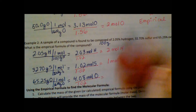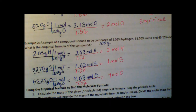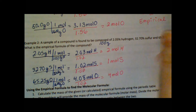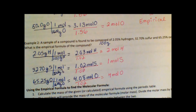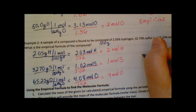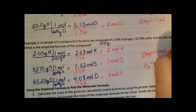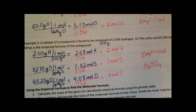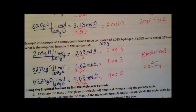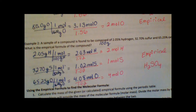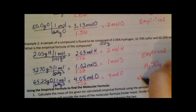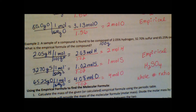Now we divide each by the smallest value, which is 1.02. This gives us approximately 2 moles of hydrogen, 1 mole of sulfur, and 4 moles of oxygen — all nice whole numbers. We didn't need the multiply-to-whole step here. Our empirical formula is H2SO4: two hydrogens, one sulfur, four oxygens. We're still not sure if this is the molecular formula or a multiple of it, like H6S3O12.